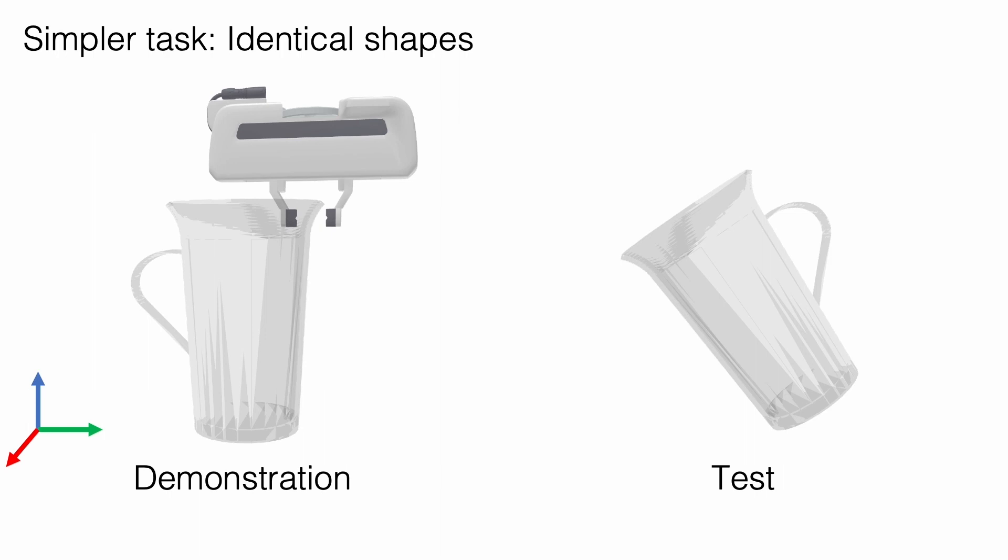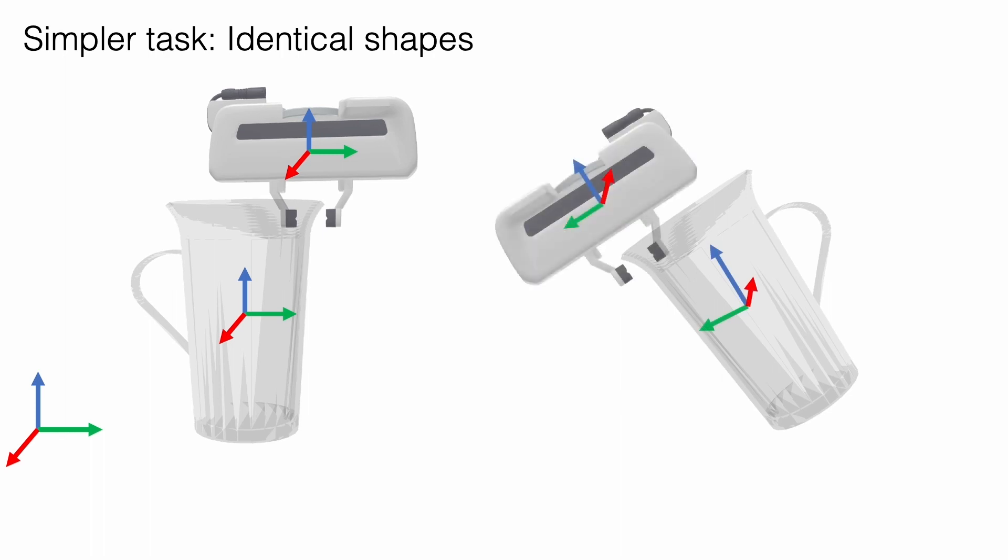To understand our approach, let's first assume the demonstration and test mugs are identical. We can attach a body frame to the object, record the grasp pose in this frame, and estimate the pose of the mug in its new configuration. The grasp can be executed by moving to the recorded grasp pose, expressed in the new frame.